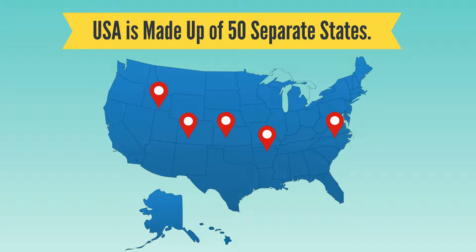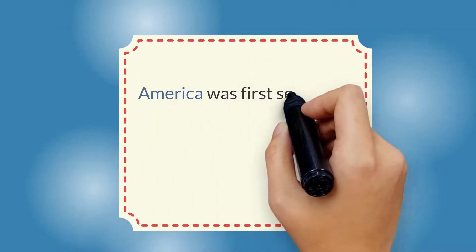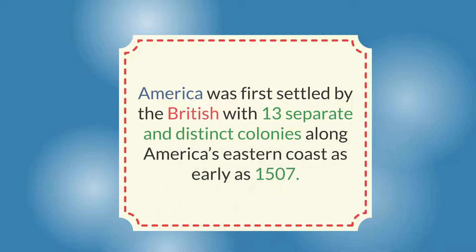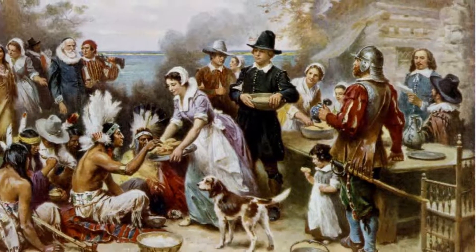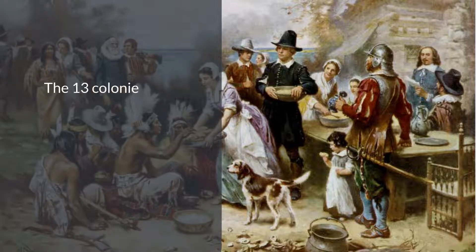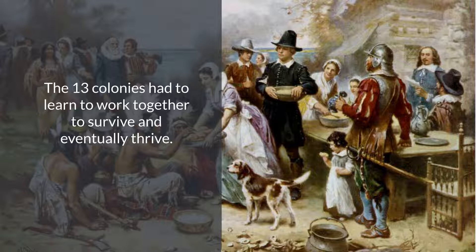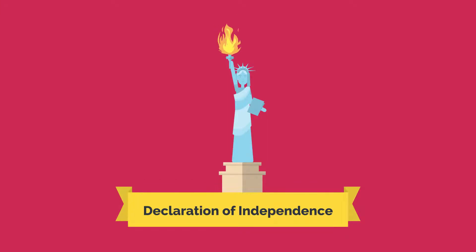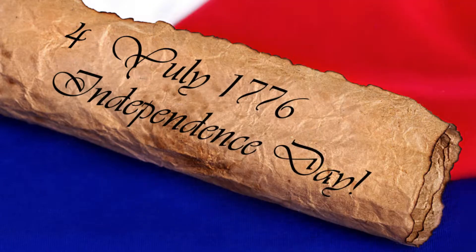Just as the United States name suggests, the country is made up of 50 individual states that form one singular country. While this setup may seem strange, there's actually a logical reason for it. Since America was first settled by the British with 13 separate and distinct colonies along America's eastern coast as early as 1507, these 13 original colonies matured and grew in size together as time went on. Because the original 13 colonies were separated from their home country in England during this time, the 13 colonies had to learn to work together to survive and eventually thrive. After a while, the original 13 colonies began to be viewed as a singular entity. These 13 original colonies famously united in declaring their independence from the British, crowned pursuant to the Declaration of Independence in 1776, which is now one of the most celebrated and renowned documents in history.